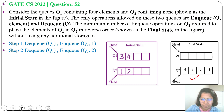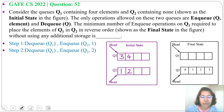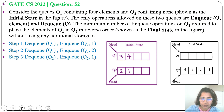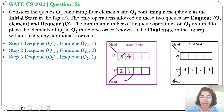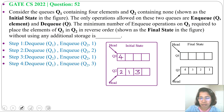So what we do: we DQ from Q2 and NQ that element back into Q2. After this DQ and NQ at Q2, we get a reordered Q2. Next, we DQ from Q1 and NQ at Q2. Now Q2 contains 2, 1, 3.